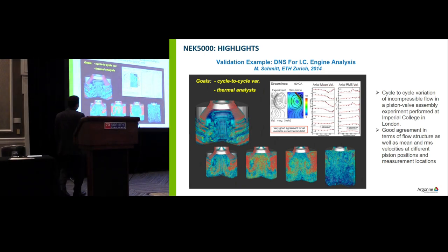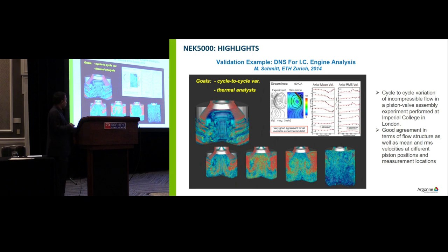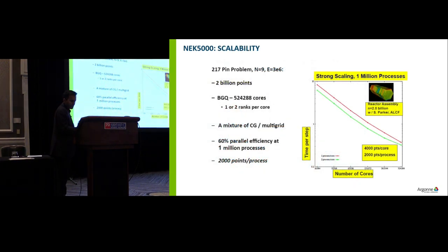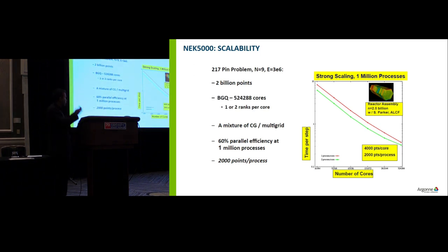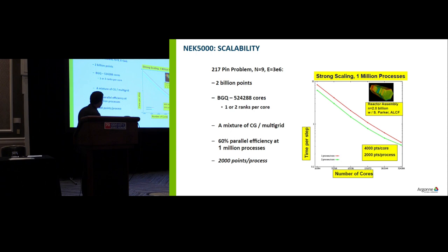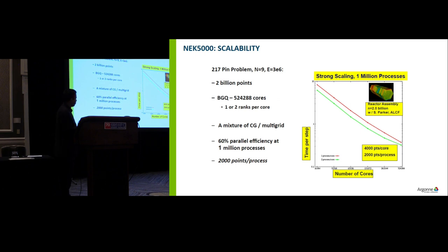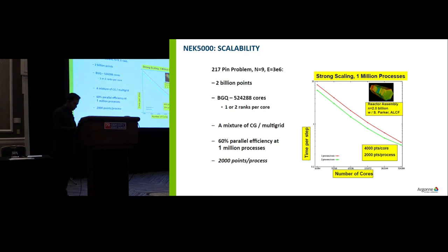This is a validation example with direct numerical simulation of an engine-type flow — flow through an open valve with the piston going up and down. A detailed comparison with experimental results showed that both the mean operation and the RMS results match pretty well. The scalability plot shows the code's scalability on 500,000 processes with two processes per core, effectively showing scalability on one million processes. This was a nuclear engineering application with about two billion grid points. This code has demonstrated extremely high scalability for a lot of applications.